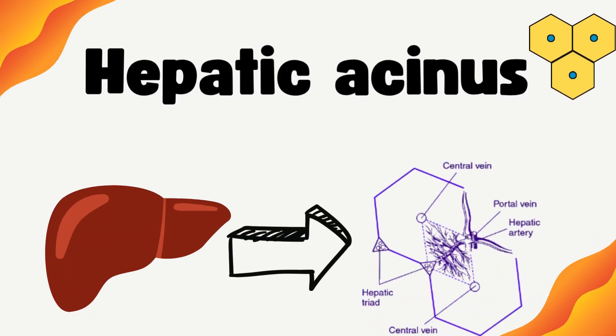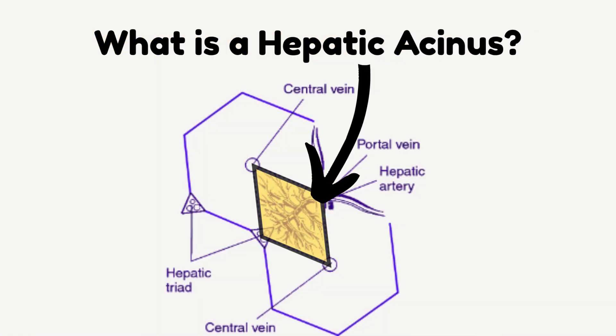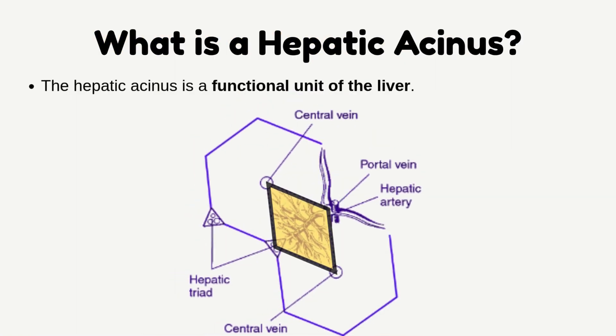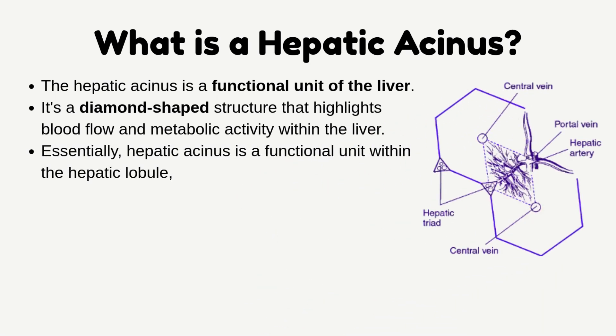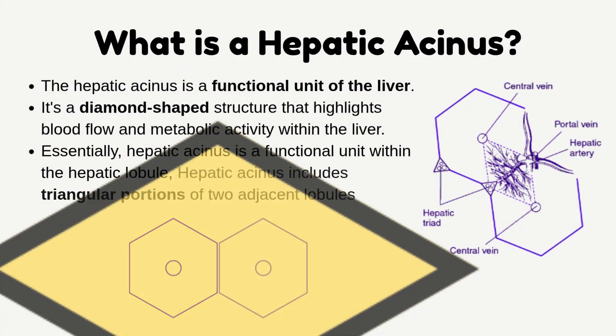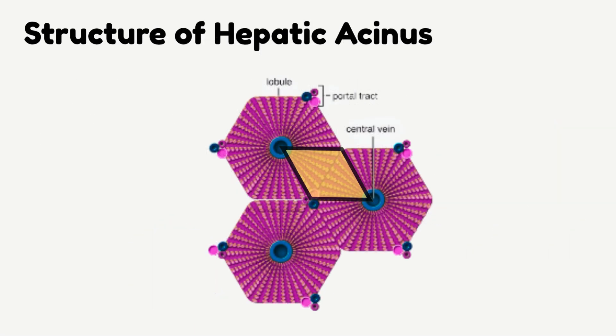The hepatic acinus is a functional unit of the liver. It's a diamond-shaped structure that highlights blood flow and metabolic activity within the liver. Essentially, the hepatic acinus is a functional unit within the hepatic lobule, and it includes triangular portions of two adjacent lobules.